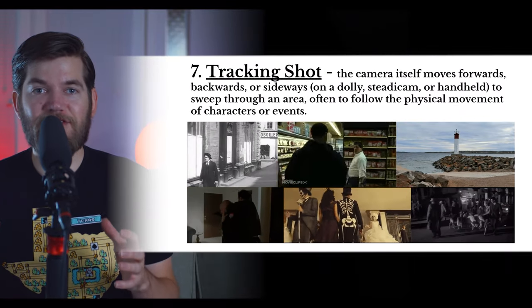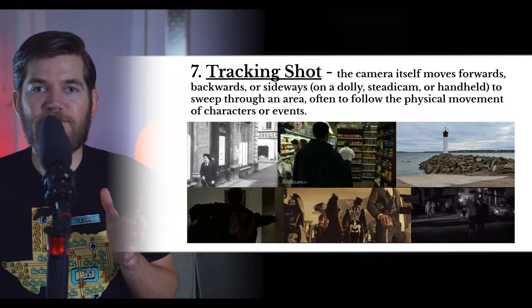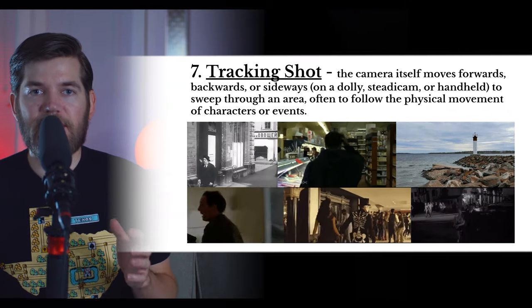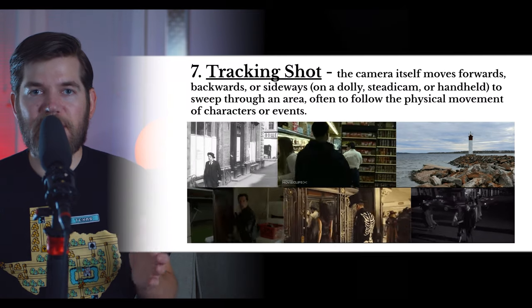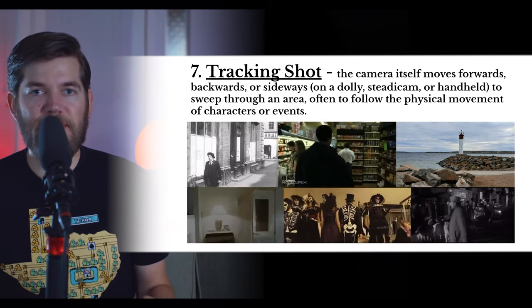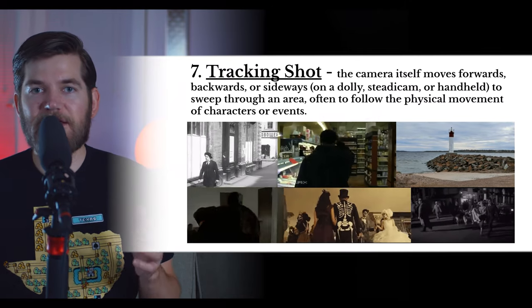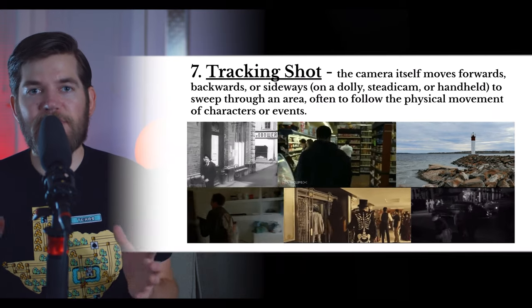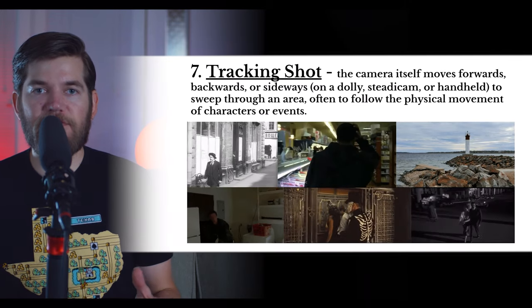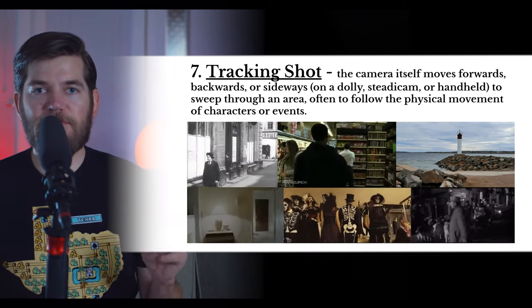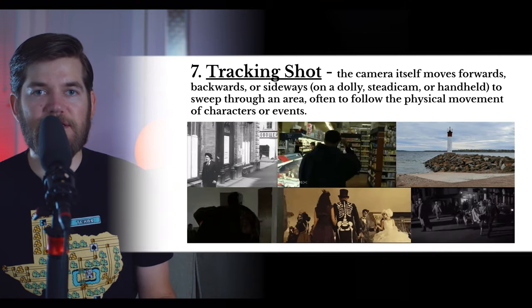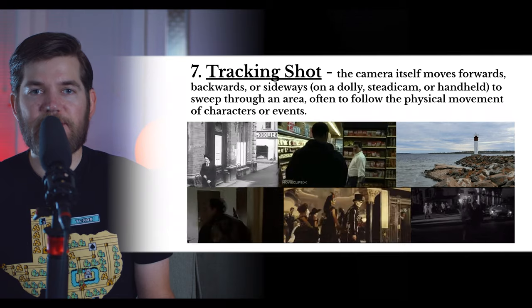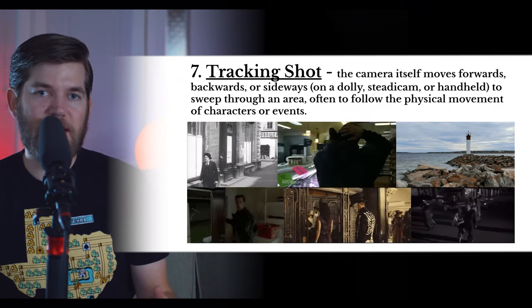Next up we have a general category: the tracking shot. A tracking shot is any shot that moves to follow a subject or to move through a location. Tracking shots include movements forward, backwards, or sideways, and include all different methods of movement including handheld, dolly, steadicam, aerial, etc. It is often used to follow the action, follow a character, or follow a series of events in a location. The following types of shots we're going to discuss are all examples of tracking shots.